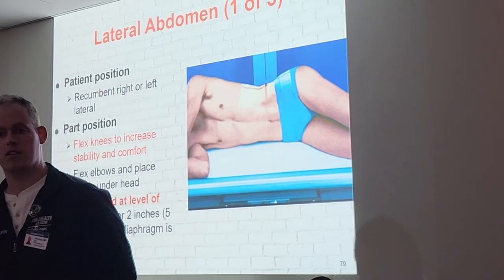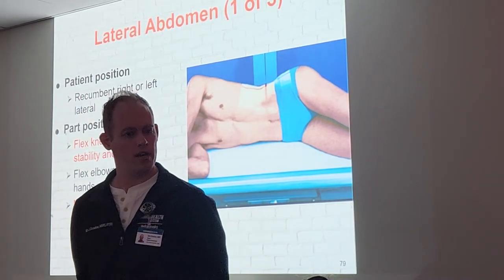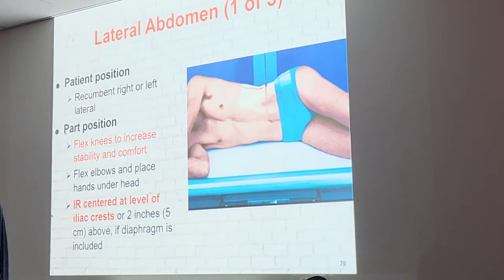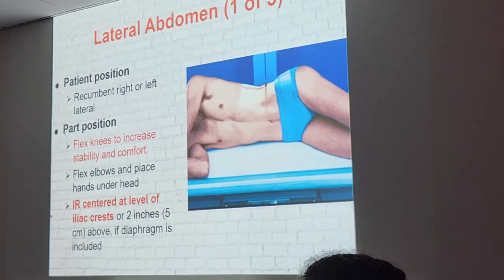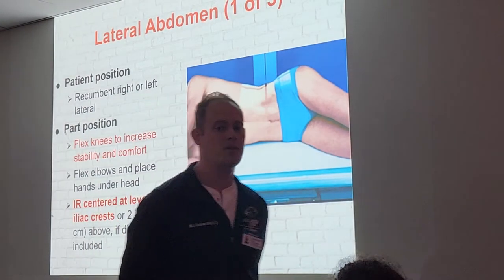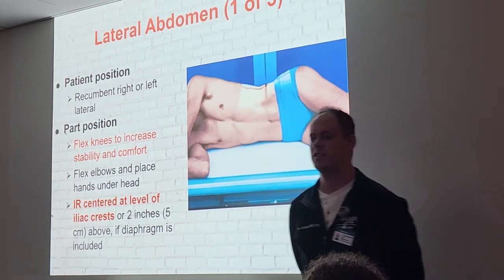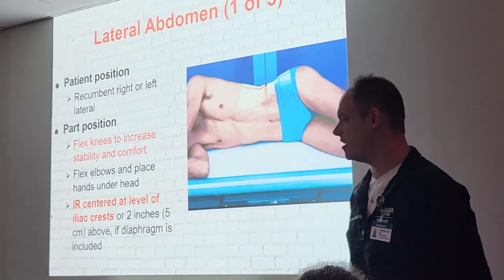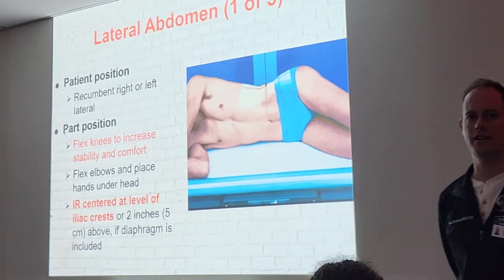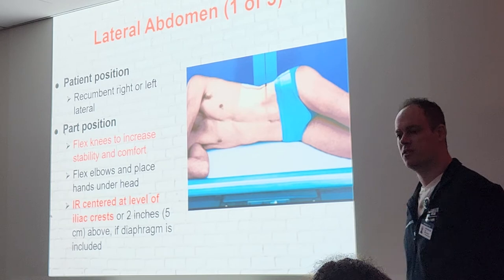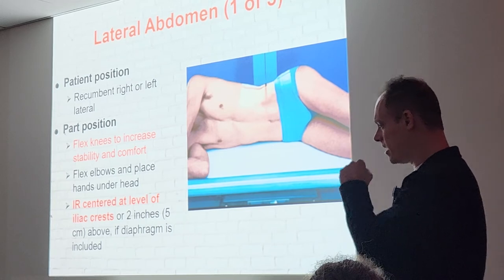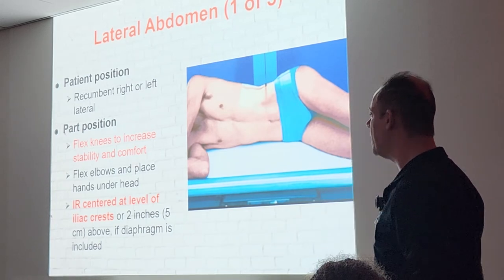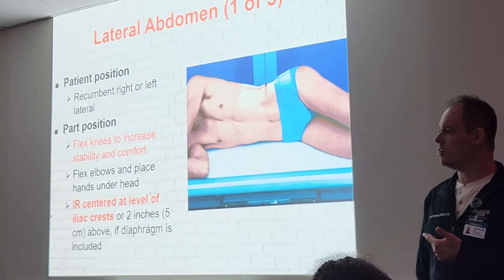This exam is not performed very often, but there is one primary reason we do it — a pathology we looked at recently: foreign objects. Lateral abdomens are done to check the placement of a foreign body — to confirm which orifice and which organ it's in. Most foreign body x-rays will always include at least an AP and a lateral, so you can see exactly where in the body it's located.